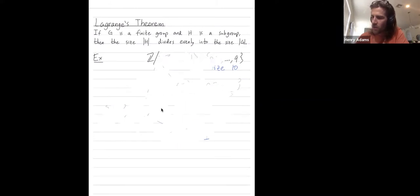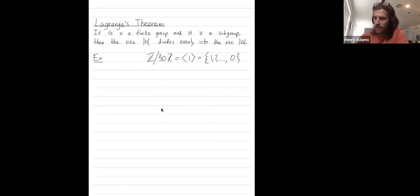We'll try to do z mod 30z. Okay, so that's generated by 1. And it's all the numbers all the way up to 30, which is 0.